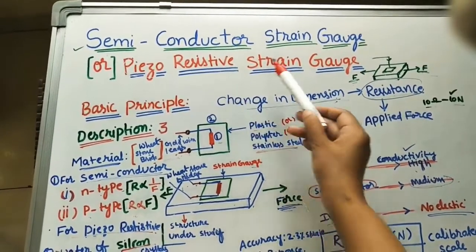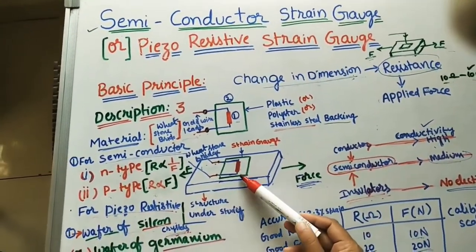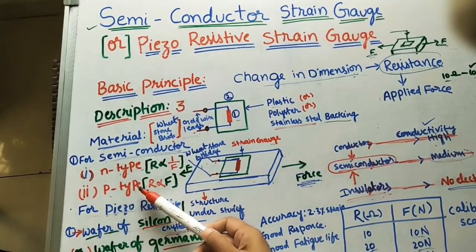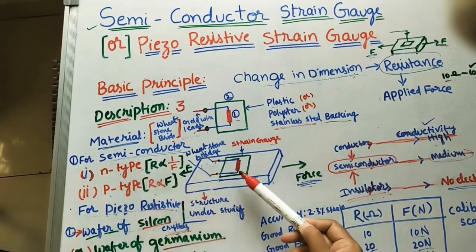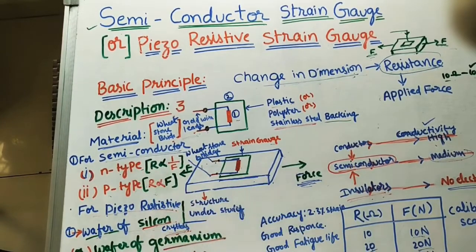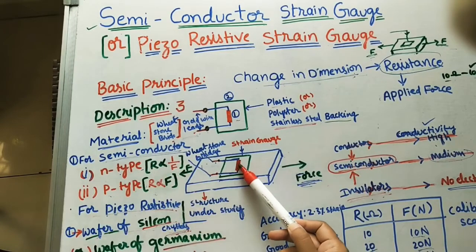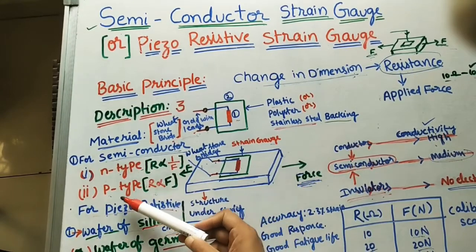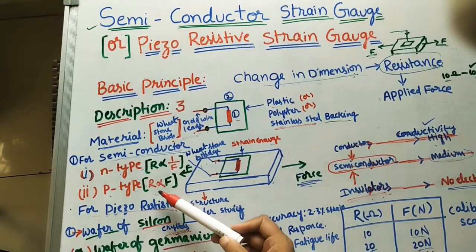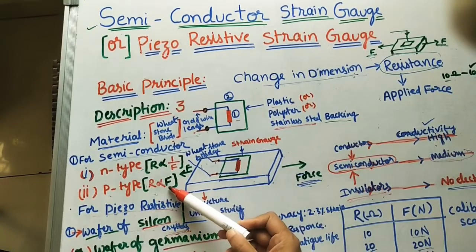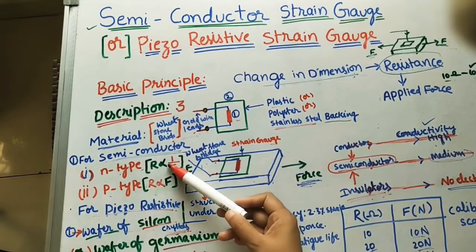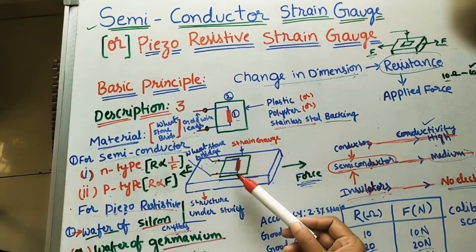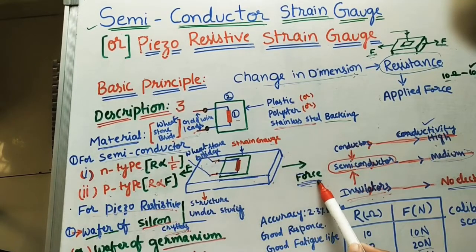In the semiconductor type, two material types behave differently. For negative-type (N-type) semiconductor, the resistance developing is inversely proportional to the applied force. For positive-type (P-type) semiconductor, the change in resistance is directly proportional to the applied force. Remember these two behaviors for the different semiconductor materials. Overall, the resistance change gives the applied force on the structure.